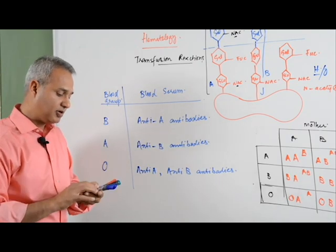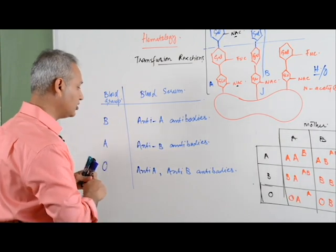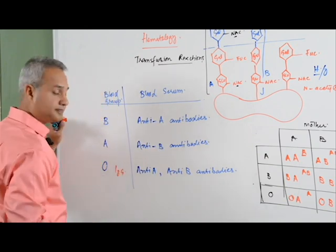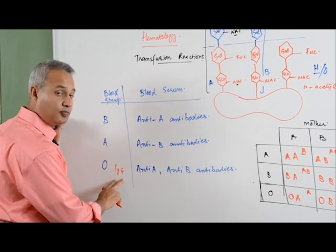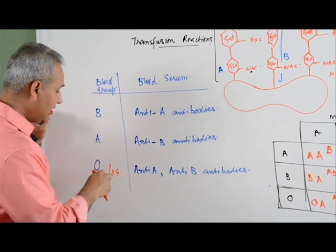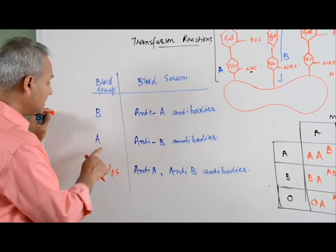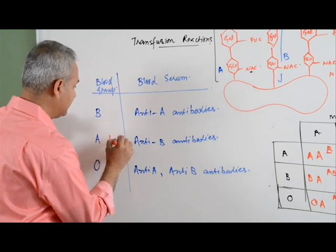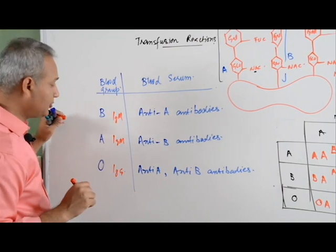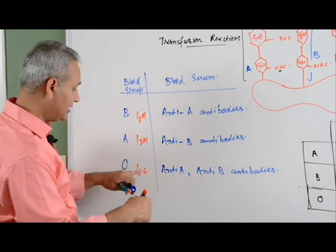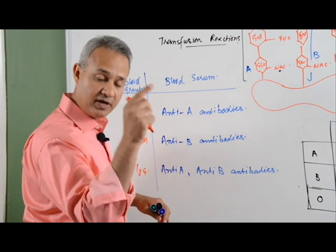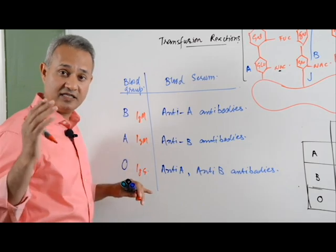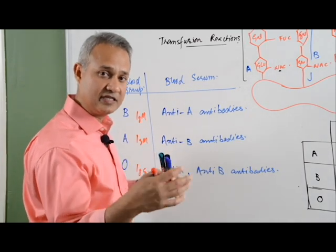Here is an important thing to remember — USMLE focuses on this. If I am blood group O, then the antibodies present are IgG type. In blood group O, the antibodies produced are IgG. In the case of blood groups A or B — where I am making antibodies only against the other type — those antibodies are IgM type. IgG crosses the placenta, which is why this matters: it can go from mother to fetus and cause a reaction there. This is why blood transfusions and pregnancy is a very important USMLE topic.